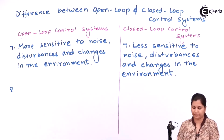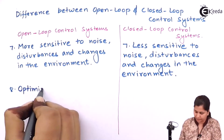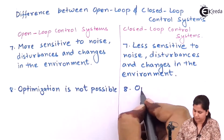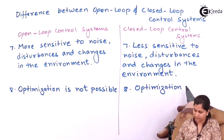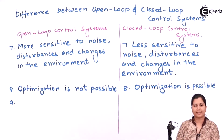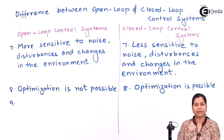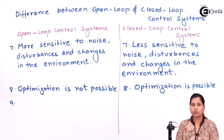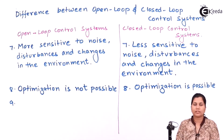The next difference is that the open loop control system can be used when the input is known ahead of time — that is, we know the input values in advance. Whereas closed loop control systems are used when the inputs are not known to us ahead of time.